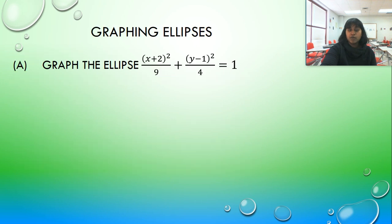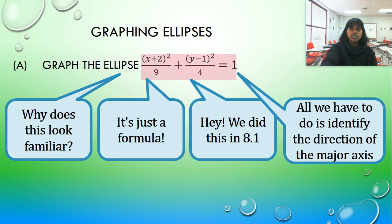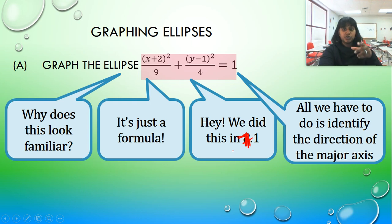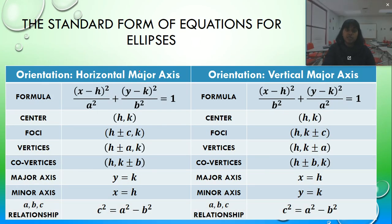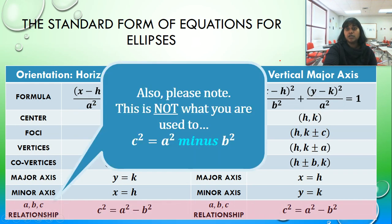Let's move on to actually graphing them. If I'm given an ellipse in standard form, (x+2)²/9 + (y-1)²/4 = 1, why does this look familiar? It's because it's our standard formula. All we have to do is identify the correct direction and the major axis. What do you notice is the unique distinction between the horizontal major axis and the vertical major axis? It's horizontal if a is under the x. It's vertical if a is under your y.